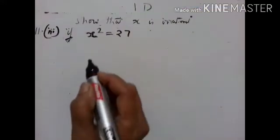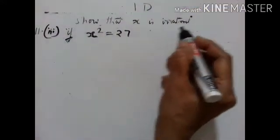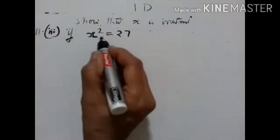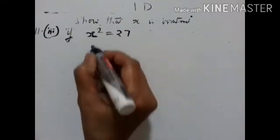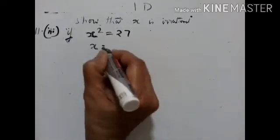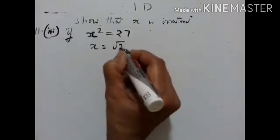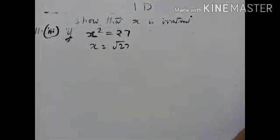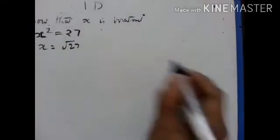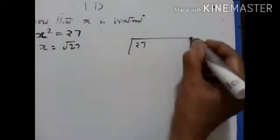Show that x is irrational if x squared is equal to 27. Therefore x is equal to square root of 27. Let us take the square root of 27 and see whether it is rational or not.